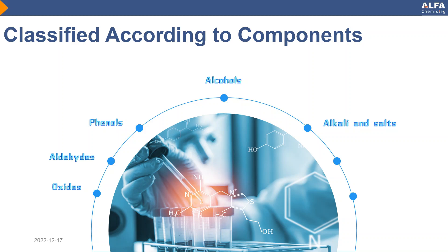Halogens: The bactericidal mechanism involves denaturing target proteins by combining halogens with the active gene of oxidizing bacteria. It is characterized by eliminating most microorganisms, mainly surface disinfection, with unstable properties. The bactericidal effect is greatly impacted by environmental conditions, such as sodium hypochlorite. It is a medium efficiency disinfectant and can be used as a general disinfectant.